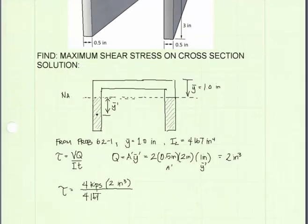Now filling in the values for the variables in the shear formula, the internal resultant shear force was four kips. Q is two inches cubed. Moment of inertia is 4.167 inches to the fourth.